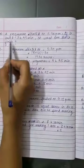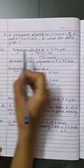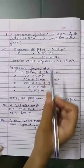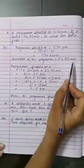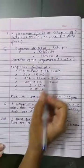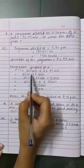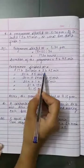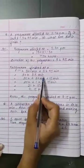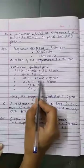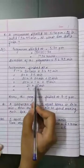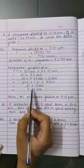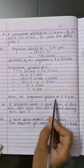Now a word problem: A program started at 5:30 pm. If it lasted 3 hours 45 minutes, at what time did it finish? We convert to 24-hour clock time: 17:30 hours. Duration is 3 hours 45 minutes. So: 17 hours 30 minutes plus 3 hours 45 minutes gives 20 hours 75 minutes. 75 minutes equals 60 minutes plus 15 minutes, and 60 minutes equals 1 hour. So 20 hours plus 1 hour gives 21 hours 15 minutes, which is 9:15 pm. Hence the program finished at 9:15 pm.